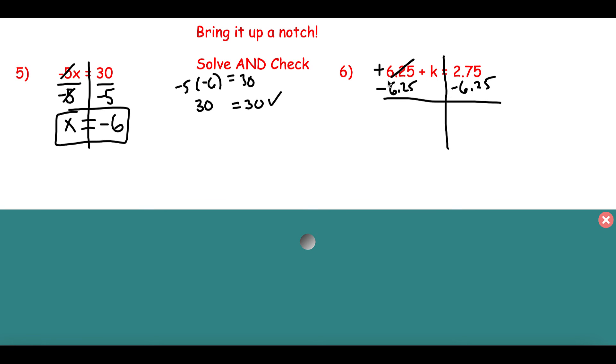Take a look here. Positive 6.25 and negative 6.25 cancel out. They equal 0. So I'm just left with a positive K. And 2.75 minus 6.25 equals negative 3.5. Let's check it. 6.25 plus negative 3.5. Does that equal 2.75? 6.25 plus that. Yes. It actually does work out. And check. Now, some of you are probably thinking, oh, he's not really checking these. Well, I am checking these. You don't want to get in the habit of just writing them down.